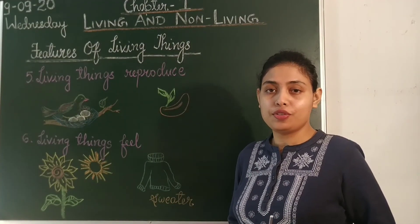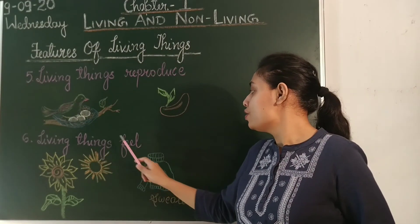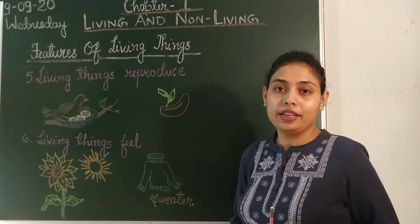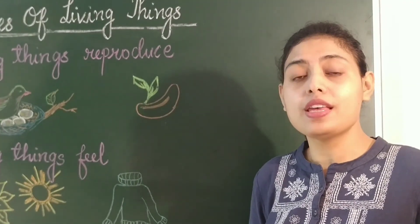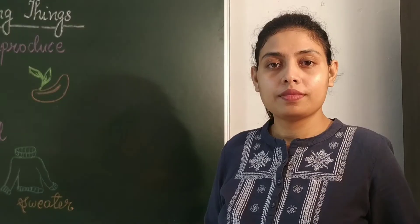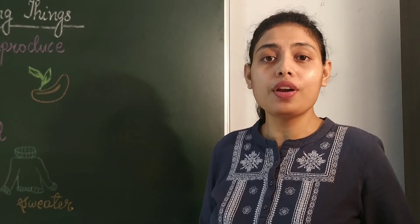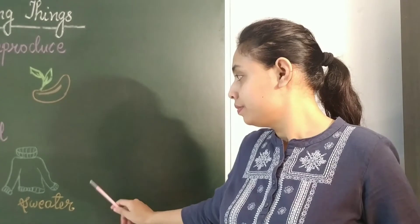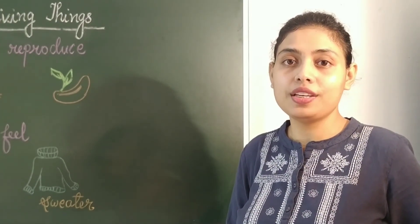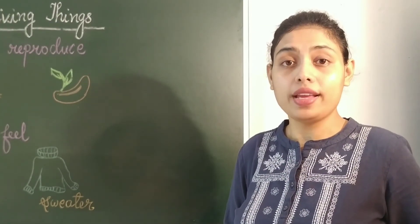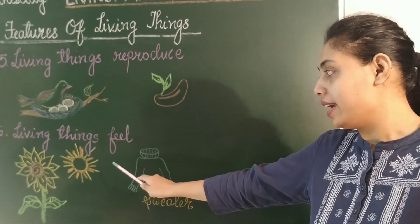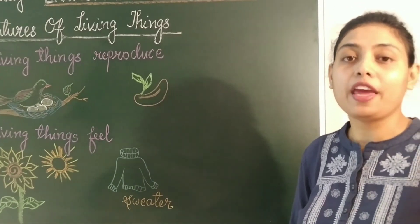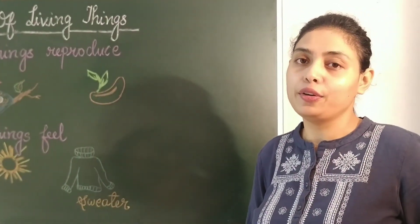Sixth feature: living things feel. All living things can feel changes around them. Humans and animals have sense organs. In winter season, when we feel cold, we cover ourselves with a sweater. Even plants can feel changes around them. For example, a sunflower moves towards sunlight because they can feel light and grow towards it.